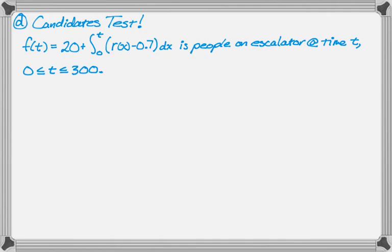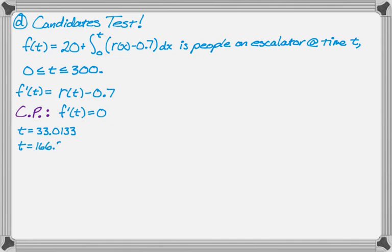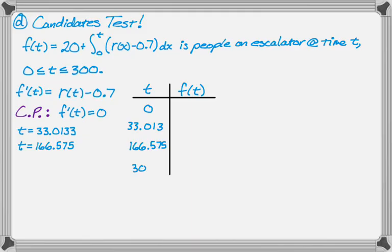Alright, so I'm going to do the candidate's test, so I need to find the derivative. So F prime of T is going to be R of T, so this is second fundamental theorem, minus 0.7, or you can just think the overall rate is rate in minus rate out, that's good enough. Setting that equal to zero to get the critical points gives me this equation, and the calculator tells me that that is T equals 33.0133, or T equals 166.575. And now what I want to do is I want to make a table, I'm going to look at T, F of T, where F of T is defined above, and I need to look at 0, at 33.0133, and 166.575, and 300. I just punched these into my calculator, and the calculator spit out the answers, so I got these values.